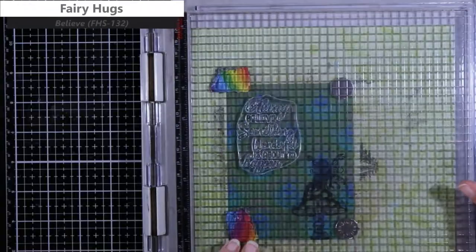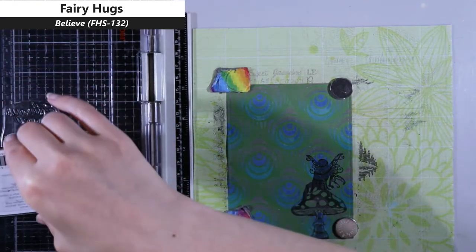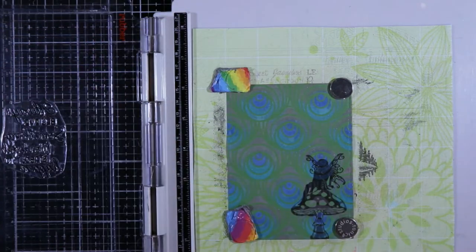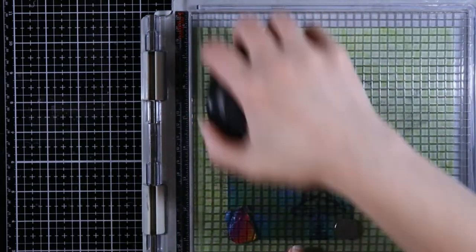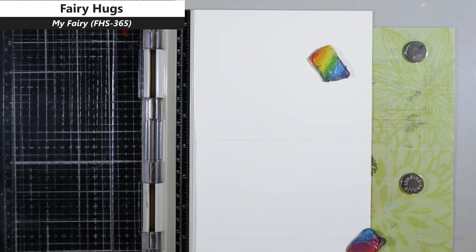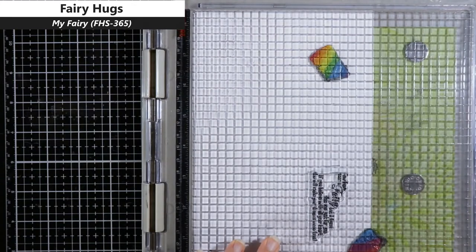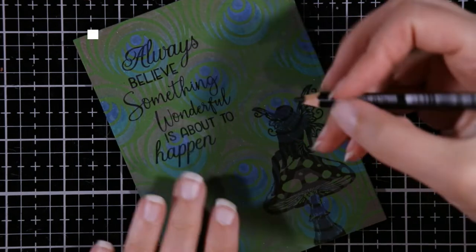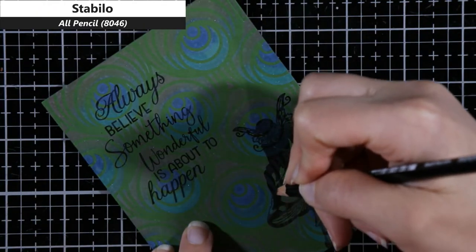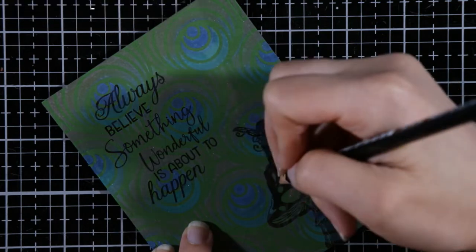Then I chose this sentiment, 'Believe.' This says, 'Always believe something wonderful is about to happen,' and I am stamping this in Nocturne as well. That will finish up the stamping for the card front. I will move on to stamping my inside sentiment and I chose 'My Fairy' for this. This says, 'If you have seen a fairy, but I have found this one for you. If you believe with all your heart, she will make your dreams come true.' I thought that was a very cute sentiment for the inside of my card.